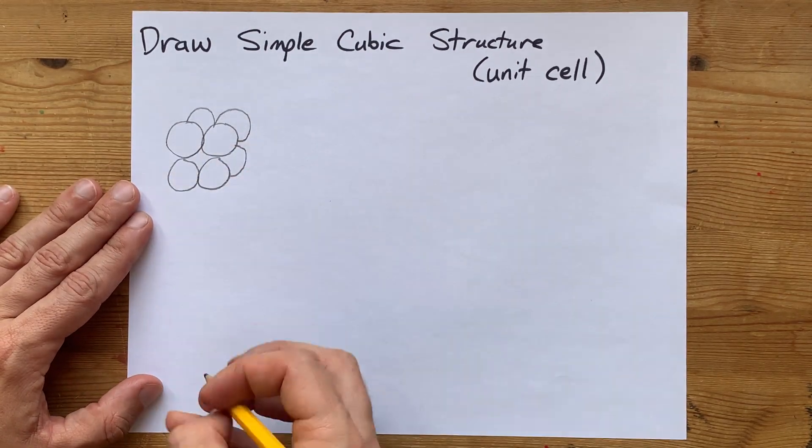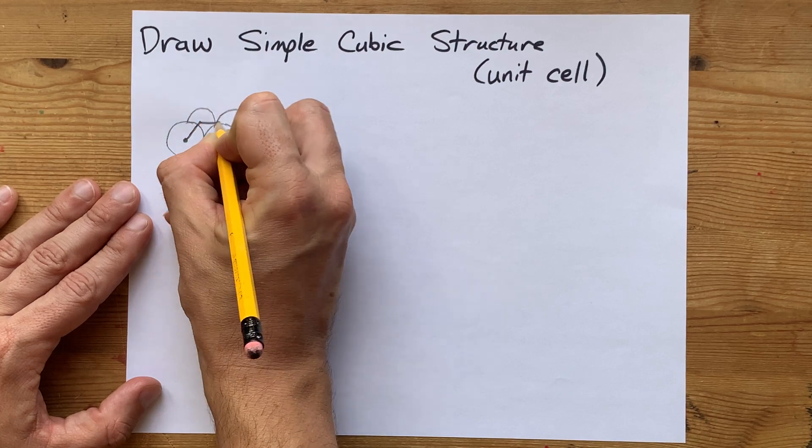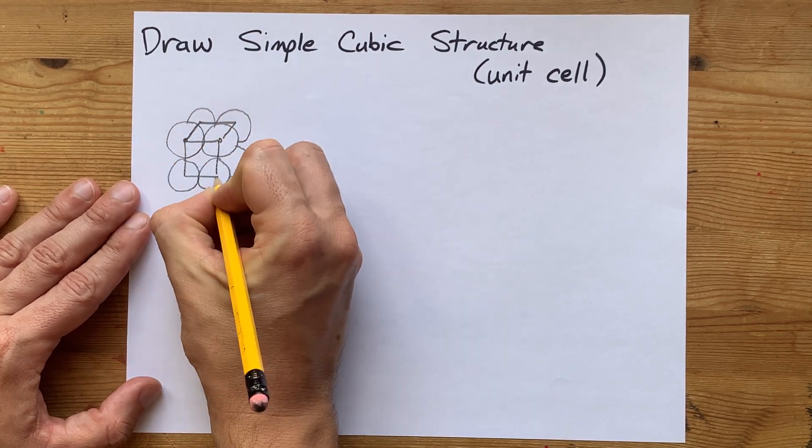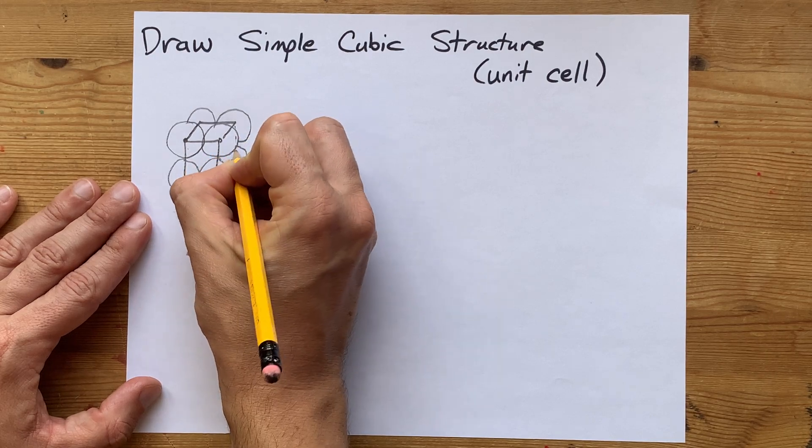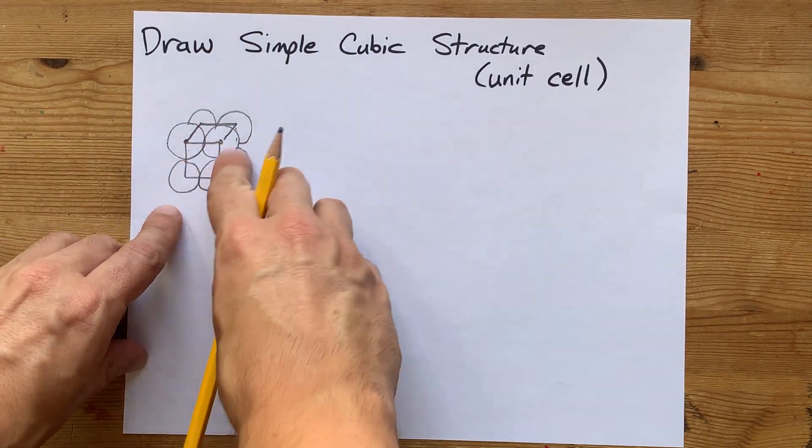The unit cell for simple cubic generally is shown as connecting the centers of these atoms, and then this repeats over and over again in all directions. But the unit cell is this cube that I'm drawing here.